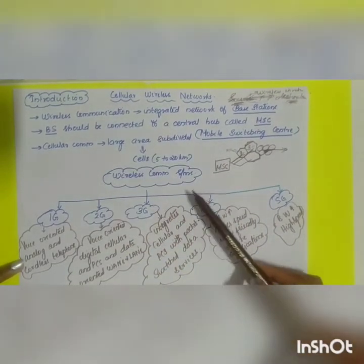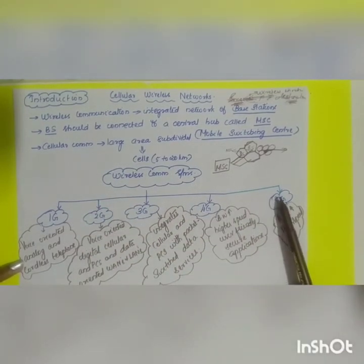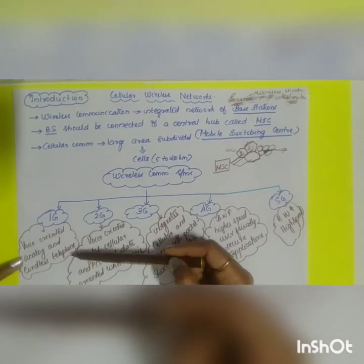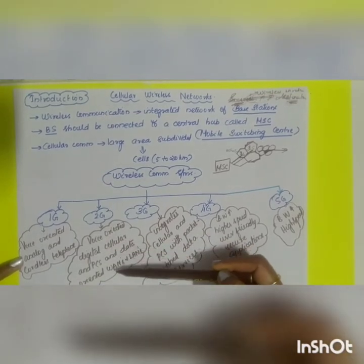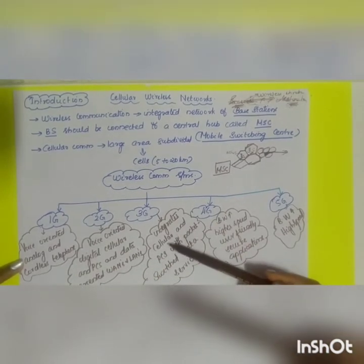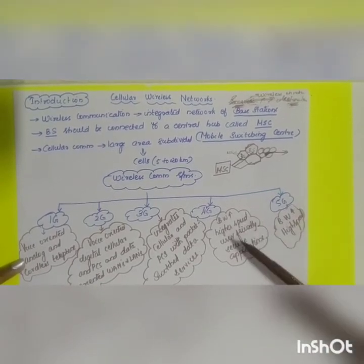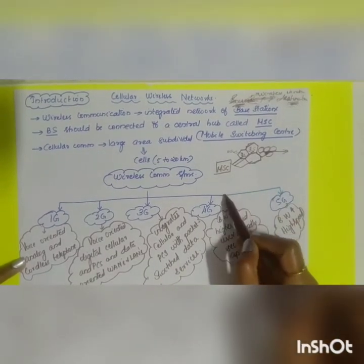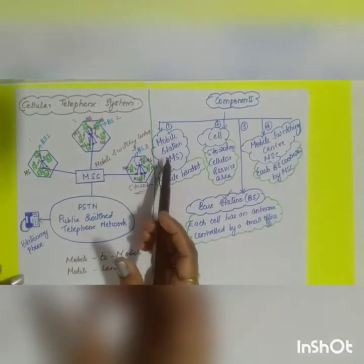The wireless communication system can be divided into different generations: 1G, 2G, 3G, 4G, and 5G. 1G comprised old voice-oriented analog and cordless phones. 2G consisted of voice-oriented digital cellular and PCS, and data-oriented WANs and LANs. 3G integrated cellular and PCS with packet-switched data services. 4G provided very high bandwidth, higher speed, user-friendly and secure applications. 5G was yet to be launched in India at the time.